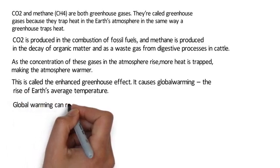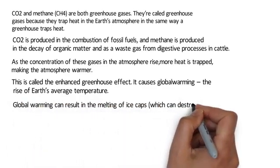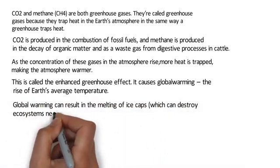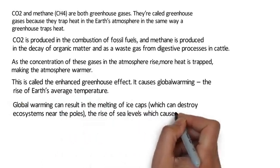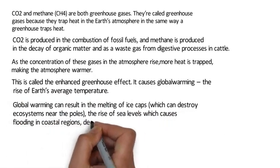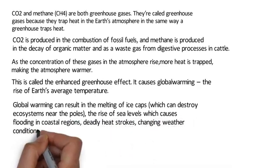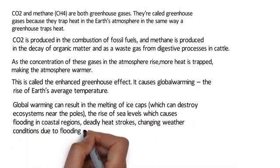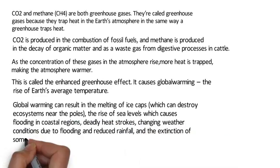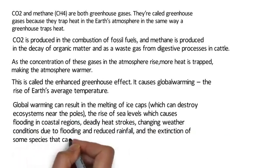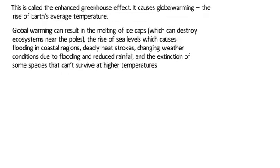Global warming can result in the melting of ice caps, which can destroy ecosystems near the poles; the rise of sea levels, which causes flooding in coastal regions; deadly heat strokes; changing weather conditions due to flooding and reduced rainfall; and the extinction of some species that cannot survive at higher temperatures.